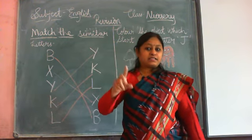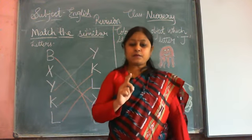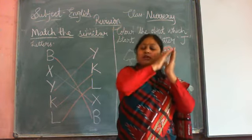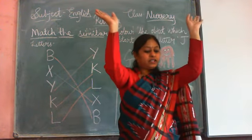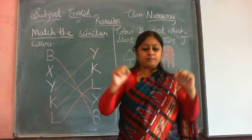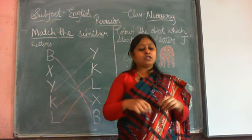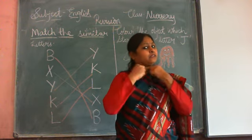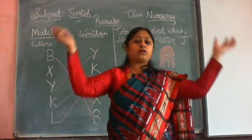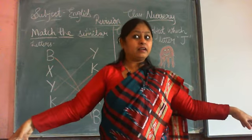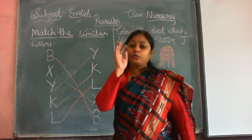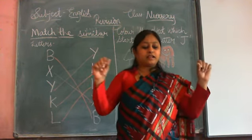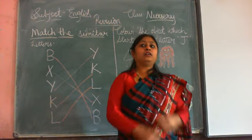Once again, let us revise the lion and the mouse. Once upon a time there was a lion. It was sleeping under the tree. A mouse came and climbed upon him. The lion got angry but set him free. Once, the lion got trapped in the net and roared for help. The mouse came and cut the net. The lion got free.